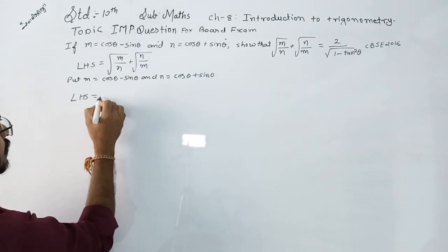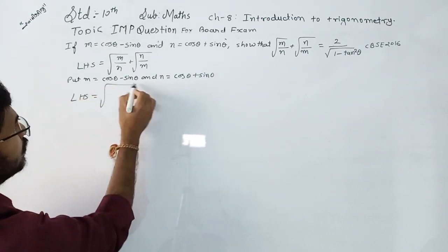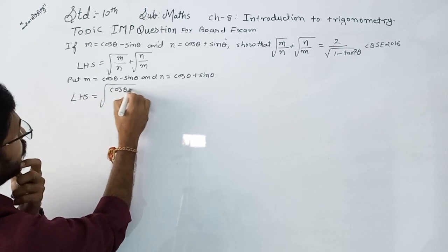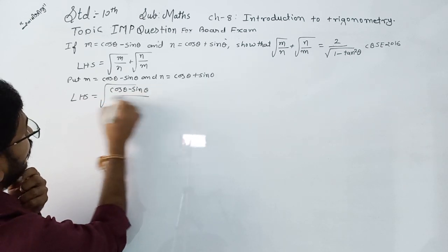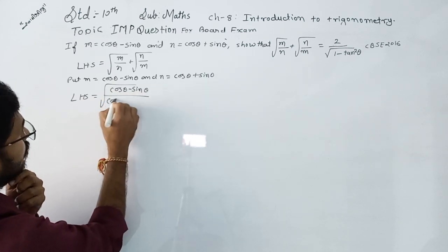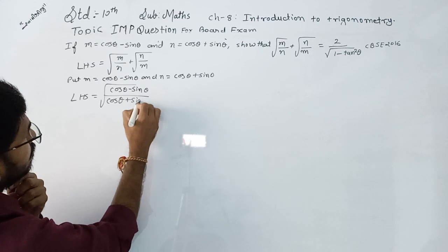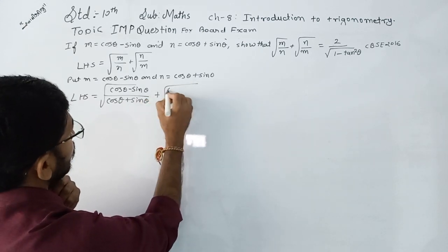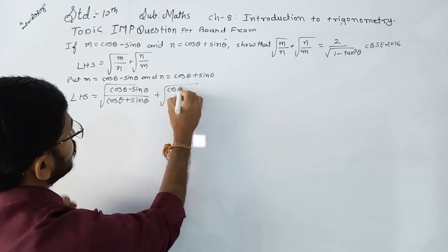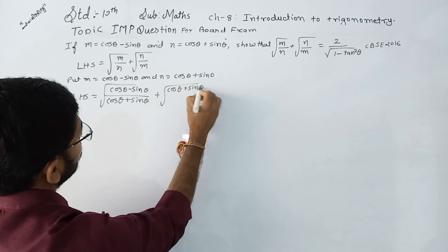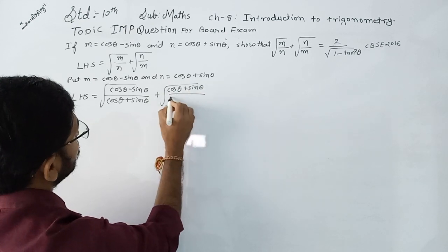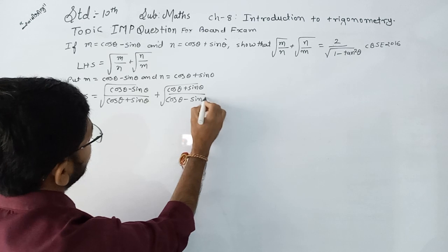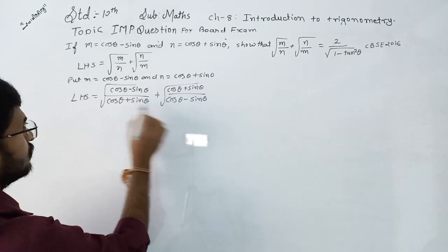Now the left hand side becomes: square root of (cos theta minus sin theta) upon (cos theta plus sin theta), plus square root of (cos theta plus sin theta) upon (cos theta minus sin theta). We need to do cross multiplication.